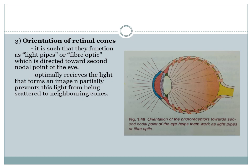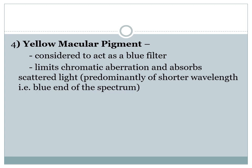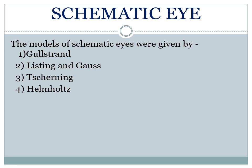The orientation of retinal cones is such that they function as light pipes or fiber optics directed towards the nodal point of the eye. This arrangement optimally receives the light that forms the image and partially prevents light from being scattered to neighboring cones. The yellow macular pigment at the macula acts as a blue filter, which limits chromatic aberration and absorbs scattered light predominantly of shorter wavelengths — that is, the blue end of the spectrum.